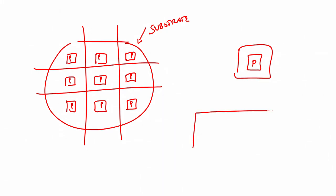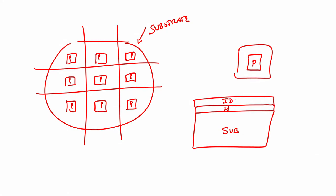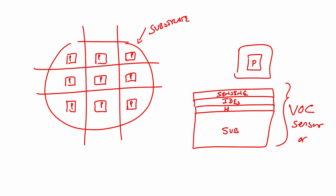Let me explain the sensor structure in terms of blocks. You have a substrate, on the substrate you have a heater, on the heater you have interdigitated electrodes, and on the interdigitated electrodes you have a sensing layer. This becomes a VOC sensor or gas sensor — substrate, heater, interdigital electrodes, and sensing layer.